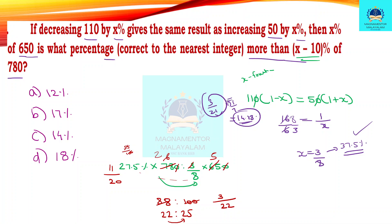The answer is approximately 14.88. Looking at the options — Option C: 3 by 22. The nearest integer option: 14 or 15? The answer rounds to 15. Options listed are 14-3, 14-3, 15-4, 14-4.